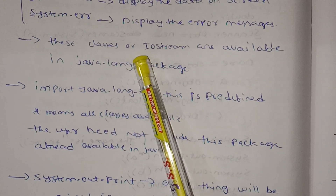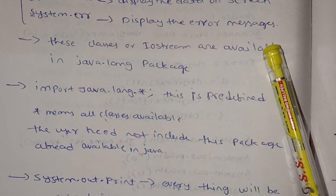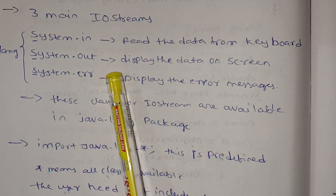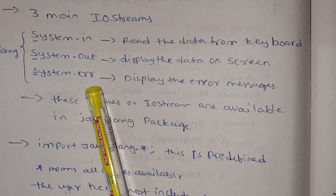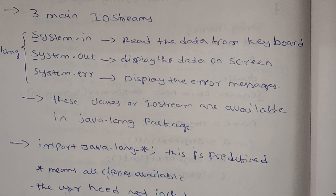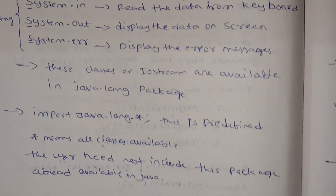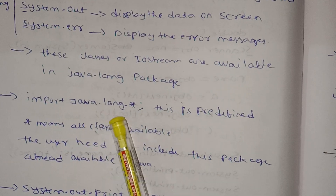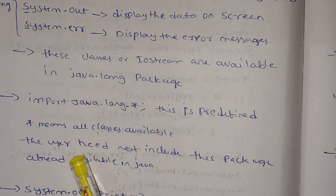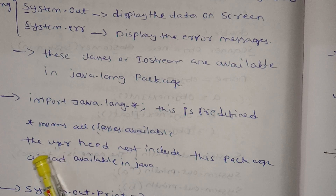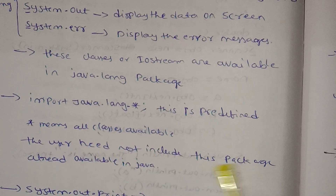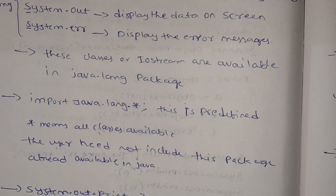These classes or I/O streams are available in the java.lang package. system.in, system.out, and system.error are all in the java.lang package. The user does not need to include the package explicitly as it is already available in Java — it is a predefined package.